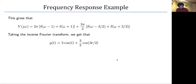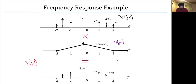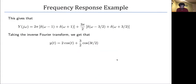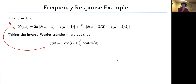Continuing the previous segment of the lecture — the recording had a maximum length. We had these two Diracs being passed for y, and we can write down our system for the frequency response of y. We simply take an inverse Fourier transform to get that y of t, the output, is 2 cosine t plus 1.5 times cosine 3t over 2.